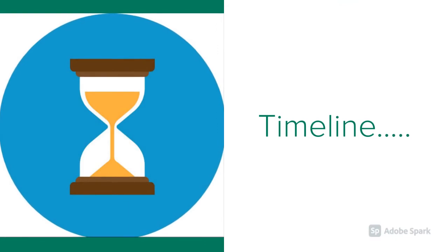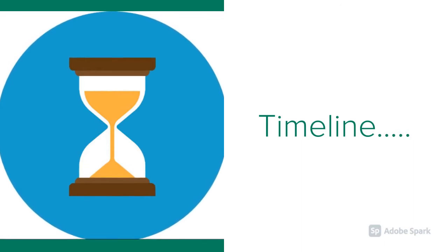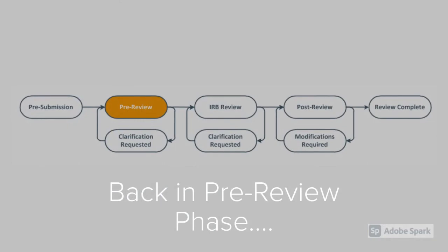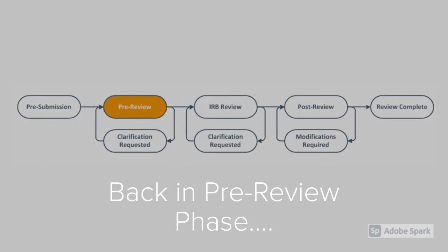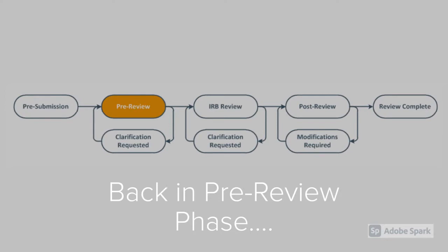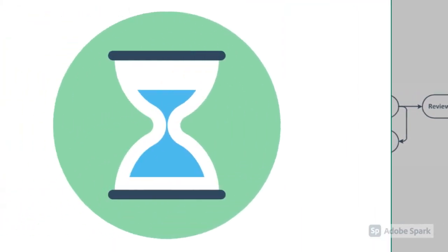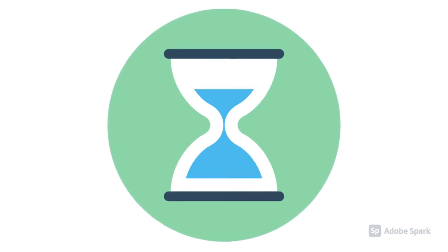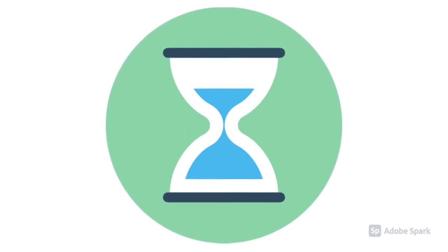The timeline for this phase depends on the number of changes the RCA requests of you in study documents and/or your Bulls IRB application. Please respond to all comments fully and in a timely manner. After you submit your comments and edits, the study moves back to the pre-review phase and the assigned RCA reviews your study again to ensure all requested changes have been made. Please note, this process will add additional time to your IRB application review, so ensure you prioritize completing any IRB requests in a timely manner to ensure a smooth and speedy review process.